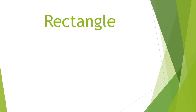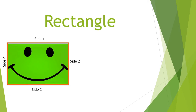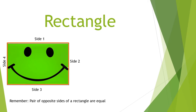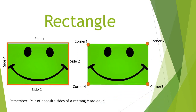The second two-dimensional shape is a rectangle. Let's see how a rectangle looks like. This is a rectangle. Let's count the sides: side 1, side 2, side 3, and side 4. A rectangle has four sides. The pair of opposite sides of a rectangle are equal — side 1 and side 3 are equal, and side 2 and side 4 are also equal.